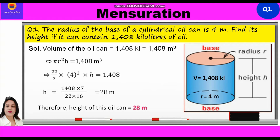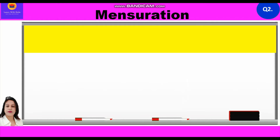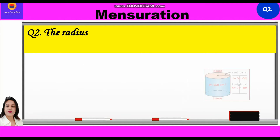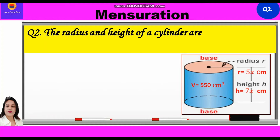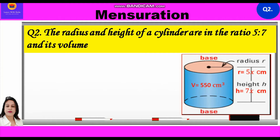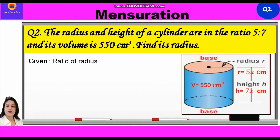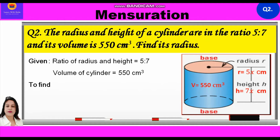Now, let us take up question number 2. The radius and the height of a cylinder are in the ratio of 5 is to 7 and its volume is 550 centimeter cube. Find its radius. So, given in this question, ratio of radius and height is equal to 5 is to 7, and volume of cylinder is equal to 550 centimeter cube. We have to find the radius.